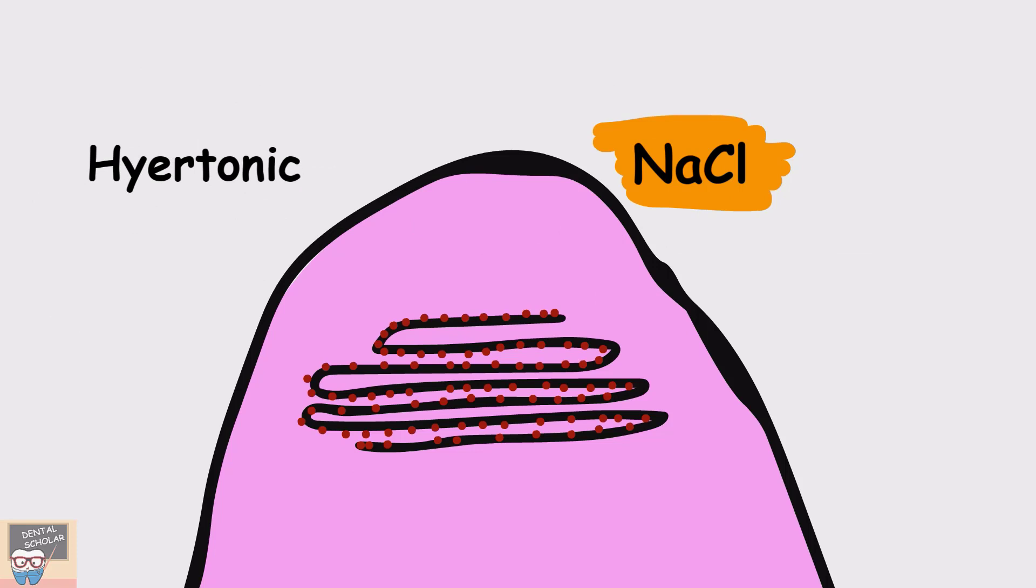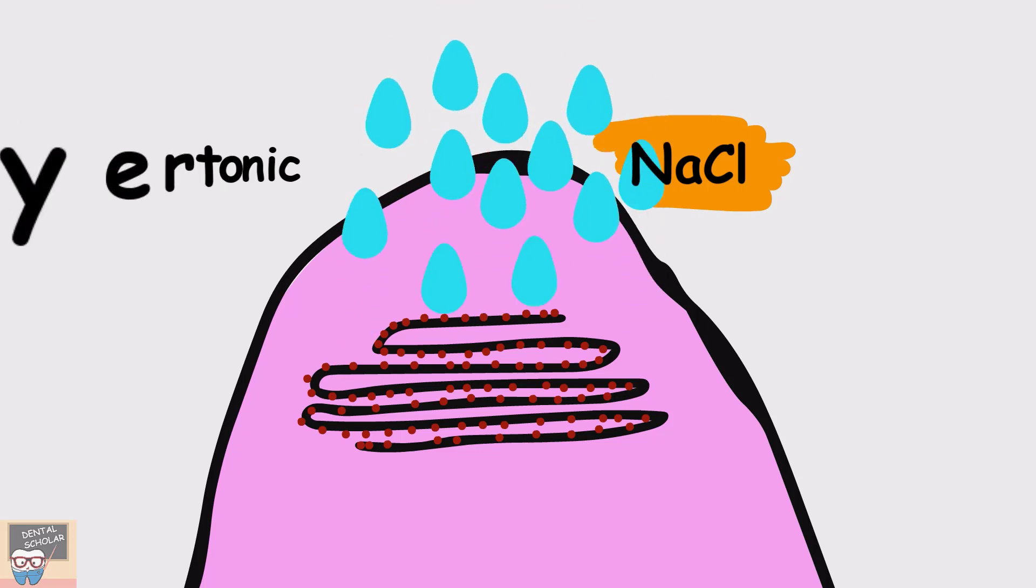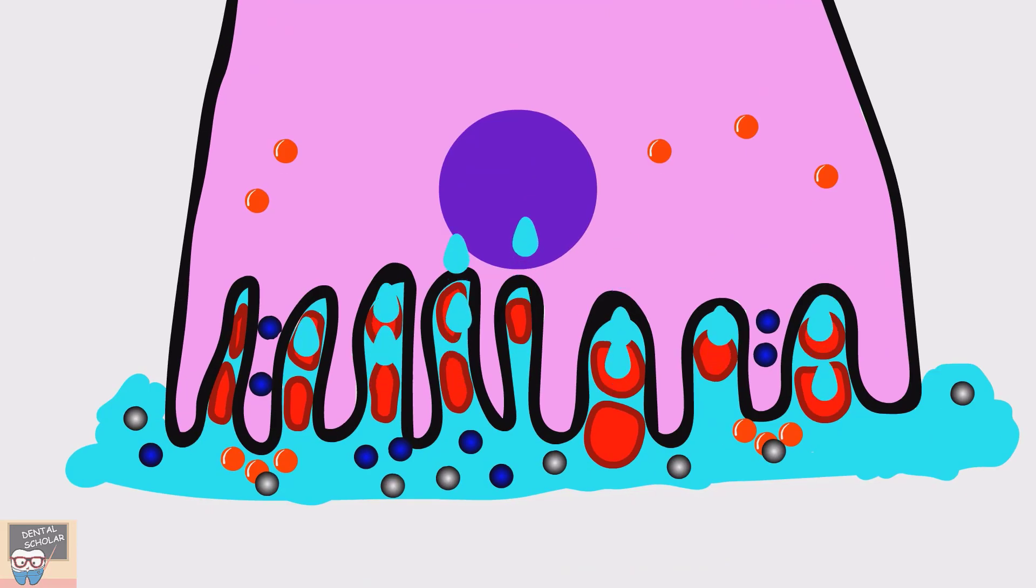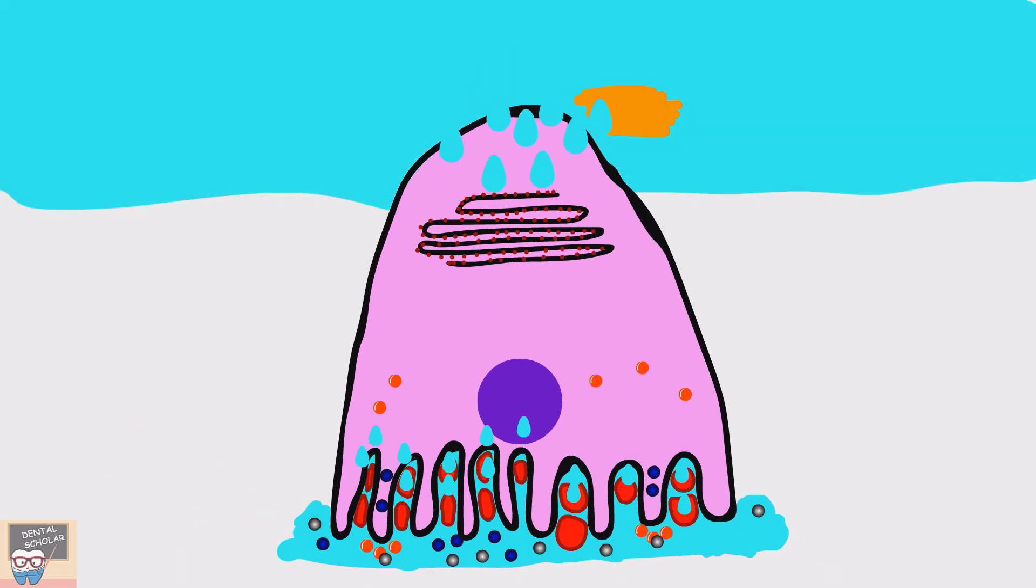Because of this hypertonic lumen, water from cell is drawn into the lumen, and the cell in turn draws water from the extracellular fluid. This flow of water continues till the water in lumen becomes isotonic. So, the first formed saliva is isotonic.